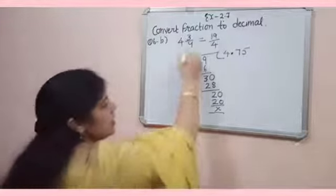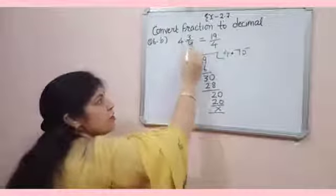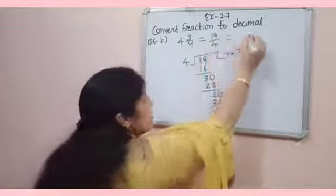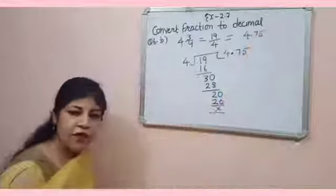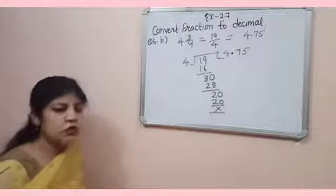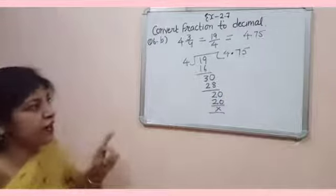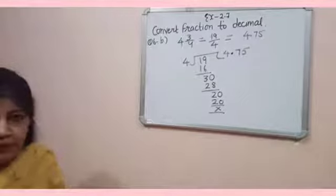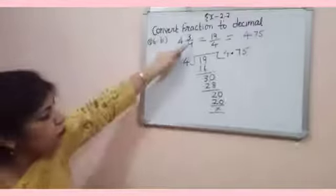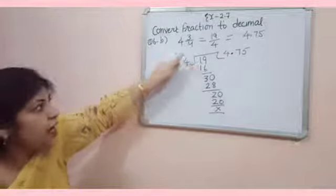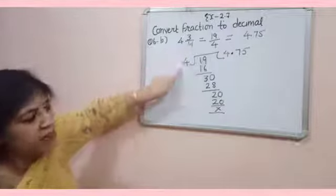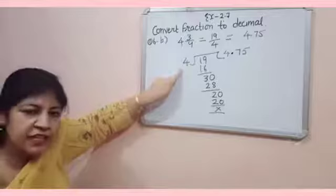It means, the decimal form of 4 and 3 by 4 is 4.75. So, to convert fraction to decimal, the numerator is taken as dividend, and denominator is taken as divisor. It doesn't matter if the numerator is greater or smaller.